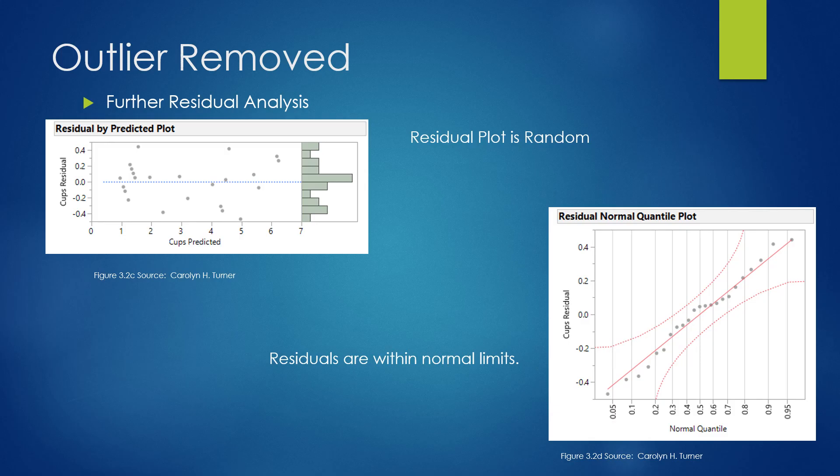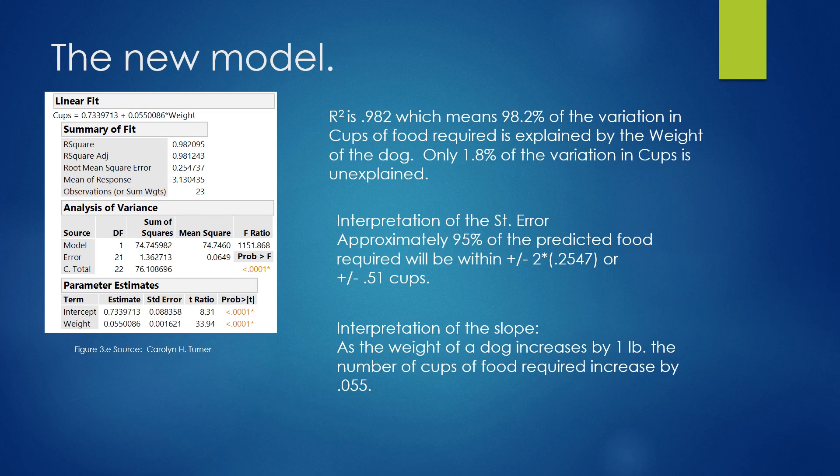Here we see the new graph of the residuals predicted by our plotted values. It is much more normal looking. They are random in nature, and this is what we want to see in our residual output. Also, in the normal graph, all of the points now fall within the two dotted red lines. That means there are no severe outliers.